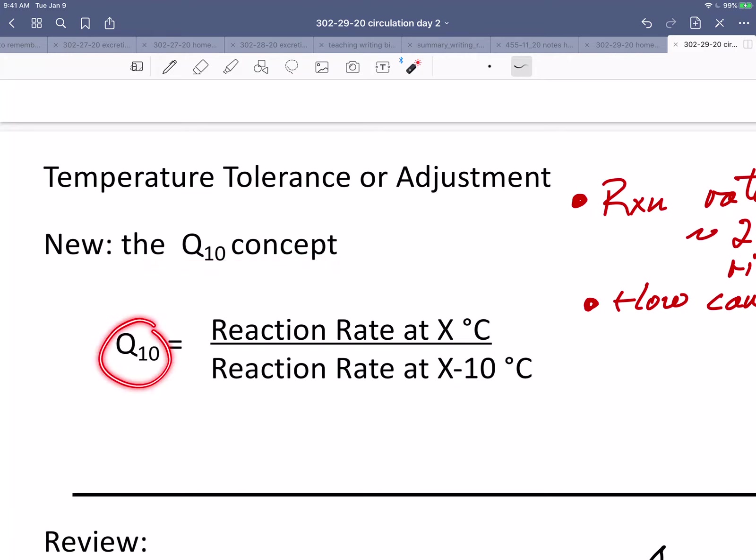Q10 is simple. It's the quotient over a 10 degree rise in temperature. The reaction rate of any reaction at some degree centigrade divided by the reaction rate at 10 degrees lower. So if that number is one, it means the reaction rate is exactly the same. This number is equal to this one, then Q10 is one.